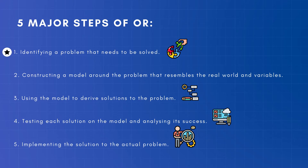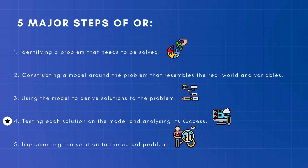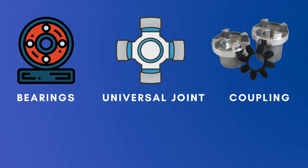The process of operations research can be broadly broken down into five major steps: first, identifying a problem that needs to be solved; second, constructing a model around the problem that resembles the real world and its variables; third, using the model to derive solutions to the problem; fourth, testing each solution on the model and analyzing success.